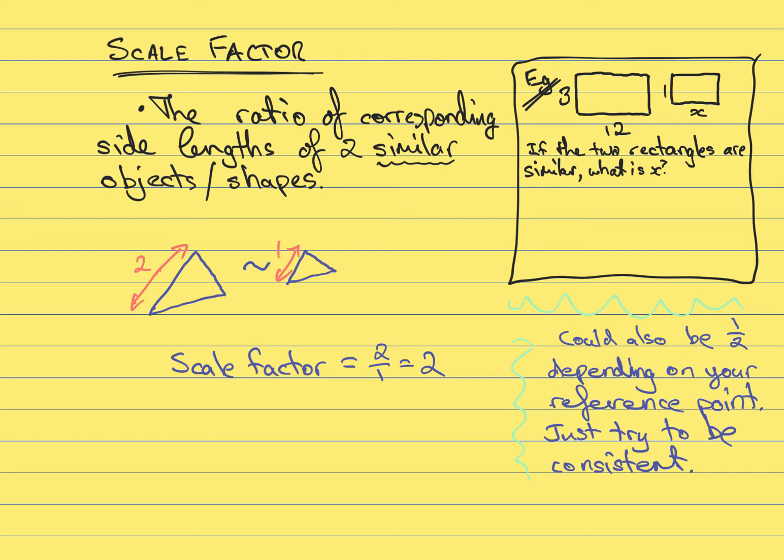For example, in the picture shown, you can see two triangles. These two triangles, I'm going to tell you, are similar, and you can see that we've got two side lengths given. So the scale factor might be calculated as the ratio of those two. In this case, I've said the ratio of two to one or two.